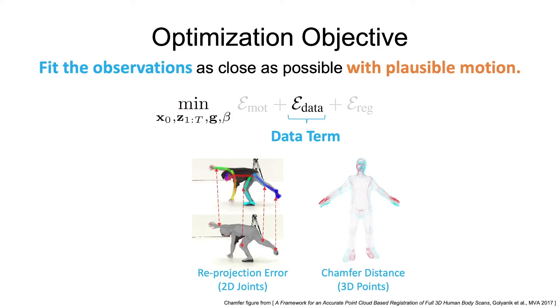The data term is the only component of our pipeline that depends on the modality of the observations. Some examples include a reprojection error when given 2D joints or chamfer distance given a 3D point cloud.